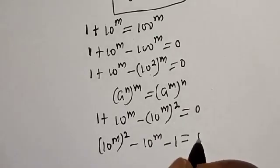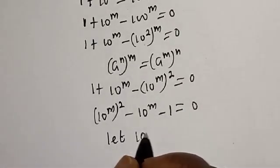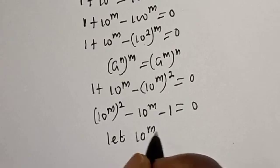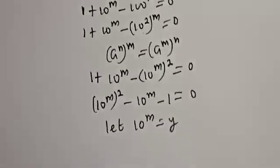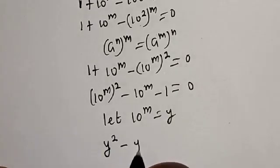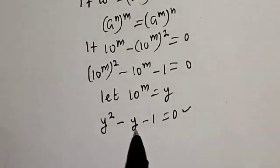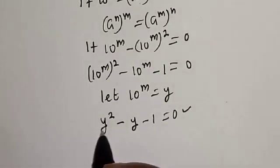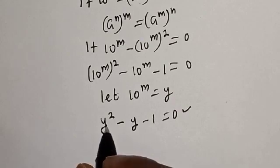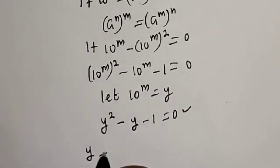Let's rearrange: we have 10 raised to power m squared minus 10 raised to power m minus 1 is equal to 0. Now let 10 raised to power m equal y, so we have y squared minus y minus 1 is equal to 0. This is a quadratic equation which can be solved using the quadratic formula.